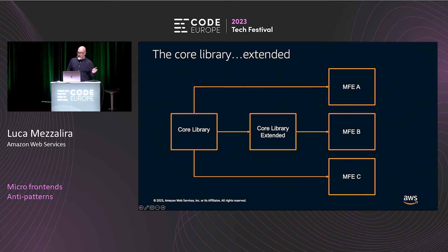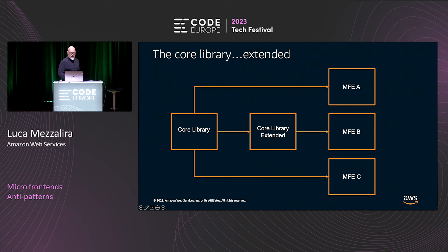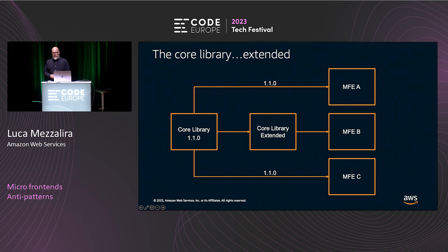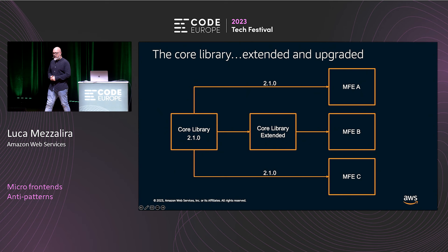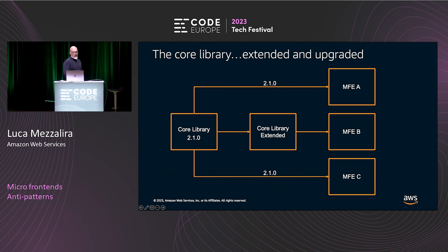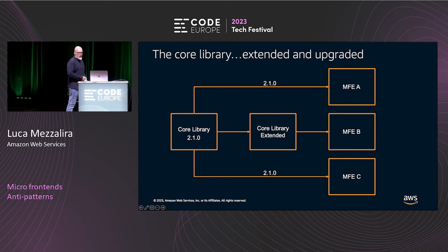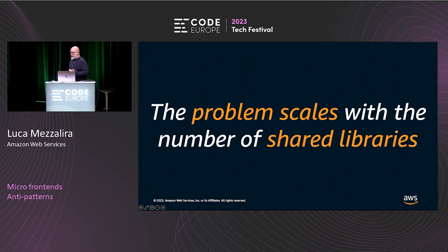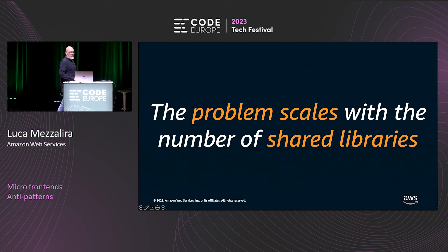It can get even worse. Imagine the micro-frontend B team says they want to extend the core library by adding new functionality to it — so you have core library extended at 1.1.0. Now a breaking change comes in — the core library goes to 2.1.0. The other micro-frontends update at the same time, but the extended library now has to also upgrade to 2.1.0 and update its code. The problem scales with the number of shared libraries you use. You have an immediate benefit but a long-run problem.